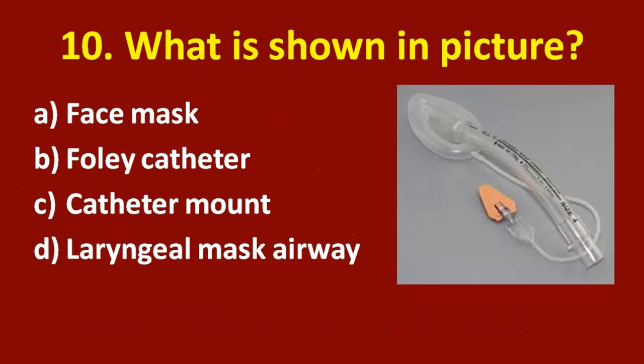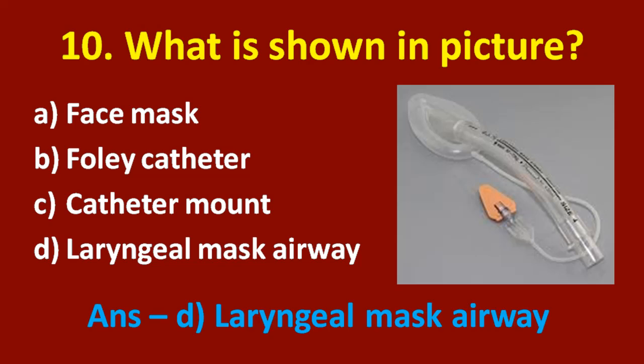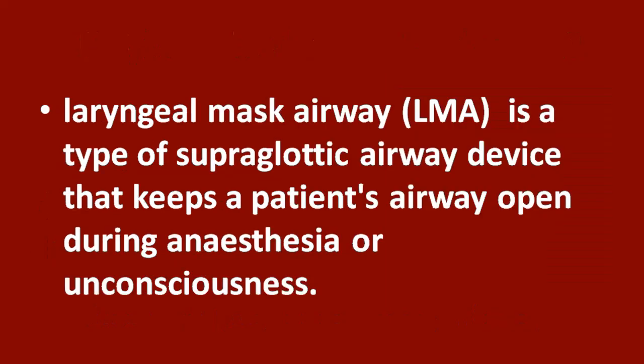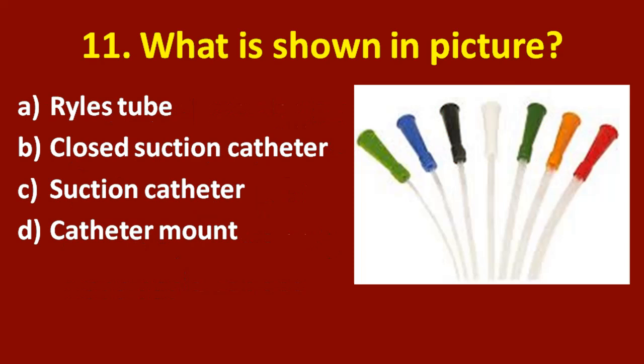Tenth question: what is shown in the picture? Option A: face mask. Option B: Foley catheter. Option C: catheter mount. Option D: laryngeal mask airway. The correct answer is option D, laryngeal mask airway. A laryngeal mask airway or LMA is a type of supraglottic airway device that keeps a patient's airway open during anesthesia or unconsciousness.